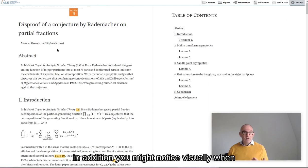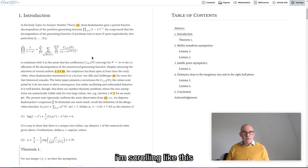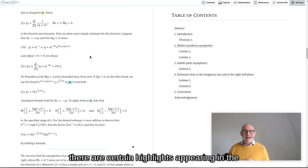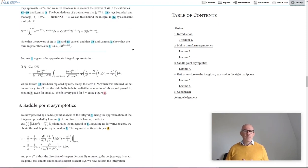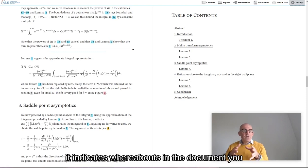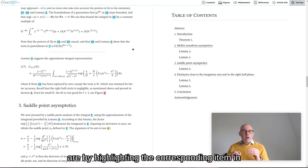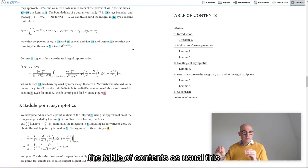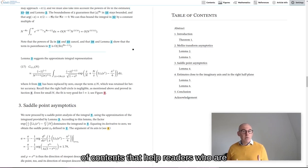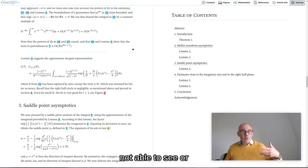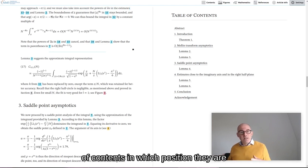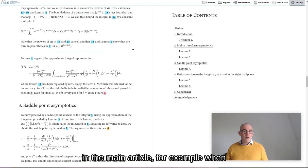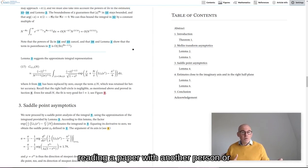In addition, you might notice visually, when I'm scrolling like this, there are certain highlights appearing in the table of contents. This is usually called a scroll spy. It indicates whereabouts in the document you are by highlighting the corresponding item in the table of contents. As usual, this is not just done visually. There are equivalent non-visual cues in the table of contents that help readers who are not able to see or not see well the other side of the math viewers' dual panel. This way, they can still tell from the table of contents in which position they are in the main article. For example, when reading a paper with another person or in a group.